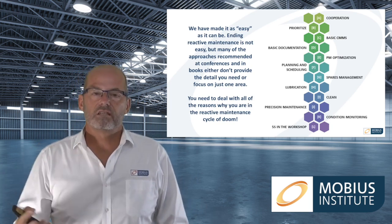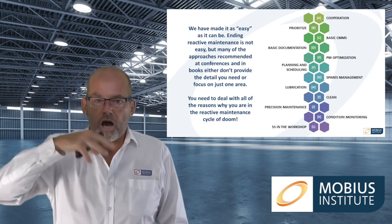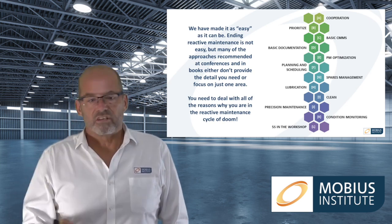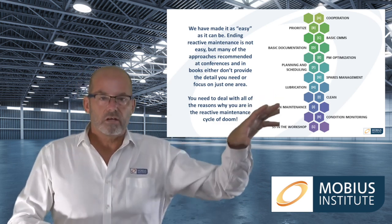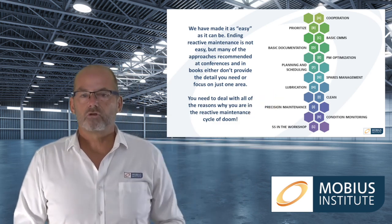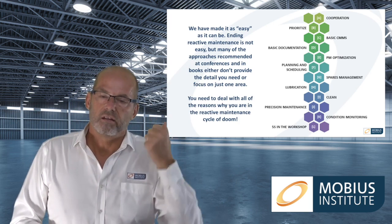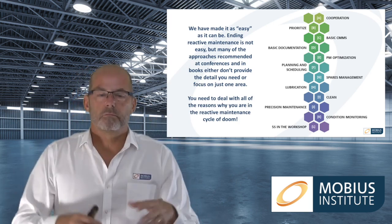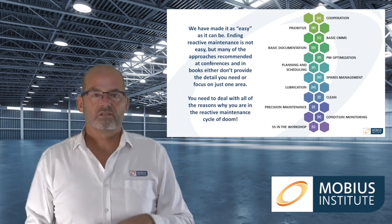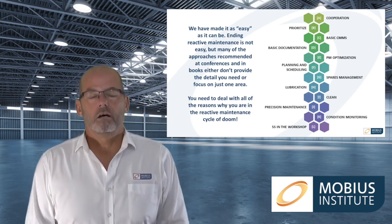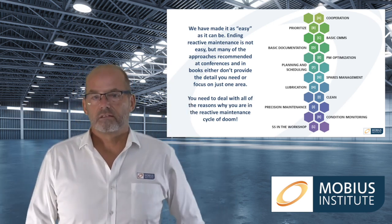For years and years people have been trying to break out of the reactive maintenance cycle of doom. Each week you might think: this week I'm going to make improvements — I've been to a conference, read a book, taken some training. But the phone rings, there's a problem, then another problem, you're fighting fires, someone's yelling about missing the production target. You get to the end of the week and think, well, next week for sure. And next week it's the same old story.